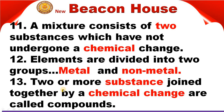Two or more Dash joined together by a Dash are called compounds. दो या दो से ज़्यादा substances होते हैं जिनको हम join करते हैं, और उनके दर्मयान chemical change आता है, और वो फिर compounds बनाते हैं। Definition: When two or more substances are joined together by a chemical change, they form compounds and are called compounds.